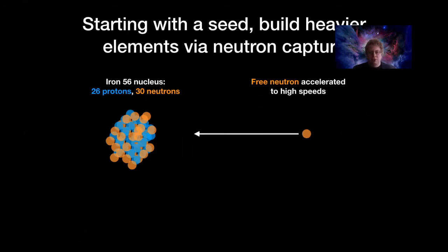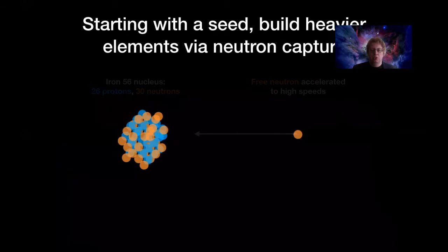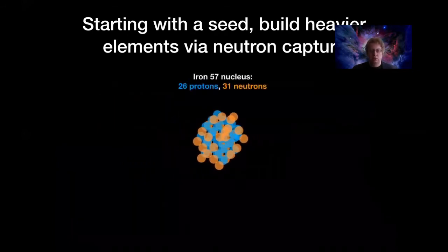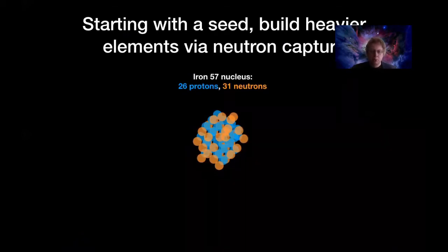The basic idea is that once you already have iron in your star, you have a seed nucleus and you can slowly add more neutrons to this nucleus to build up its mass. For example, you take an iron-56 nucleus, add a neutron, and that changes it into iron-57, where 57 is the mass of the nucleus in terms of protons and neutrons.